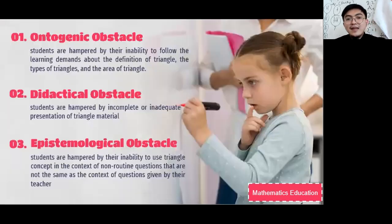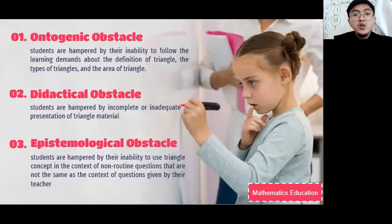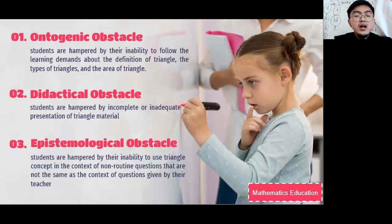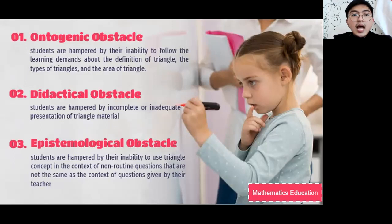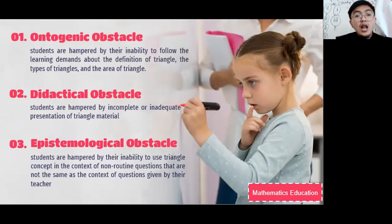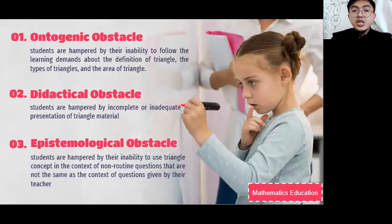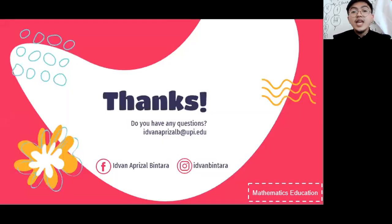In conclusion, the study found that junior high school students experienced three types of learning obstacles on the concept of triangles. First, ontogenetic obstacle: students were harmed by their inability to follow learning demands about the definition, types, and area of triangles. Second, didactical obstacle: students were harmed by incomplete or inadequate presentation of triangle materials. Third, epistemological obstacle: students were harmed by their inability to use triangle concepts in the context of non-routine questions different from those given by their teachers. Thank you for your attention. If you have any questions, please write in the comments. Goodbye.